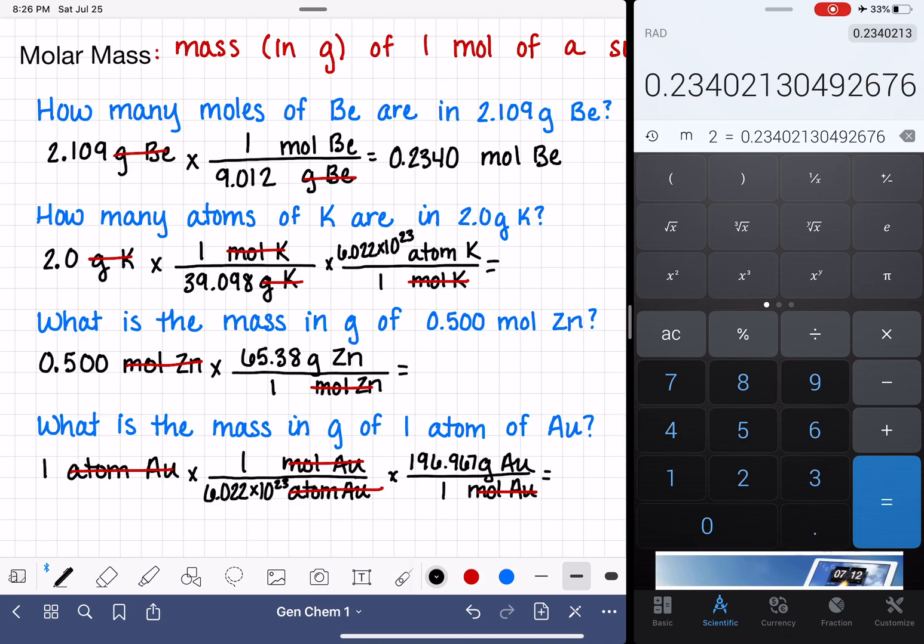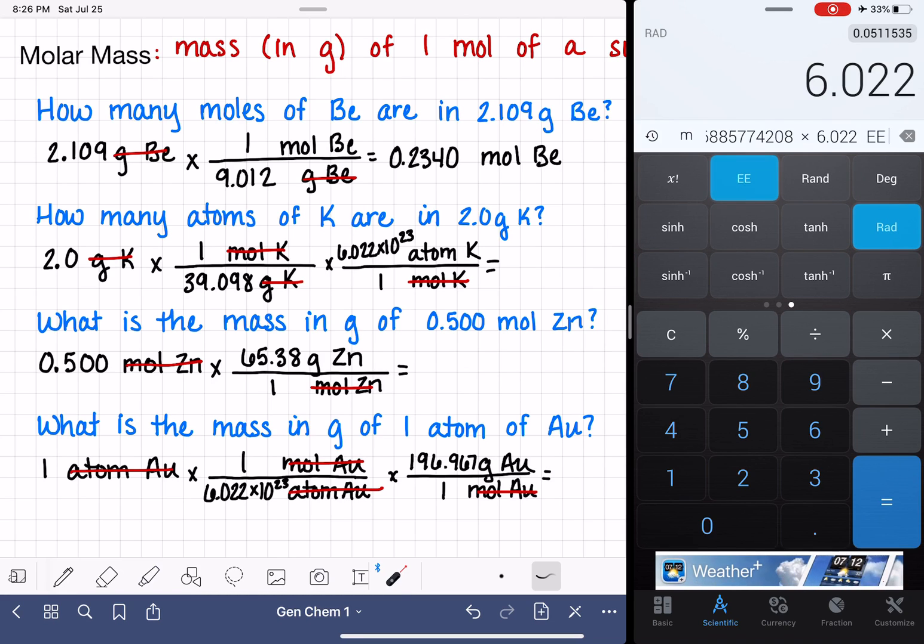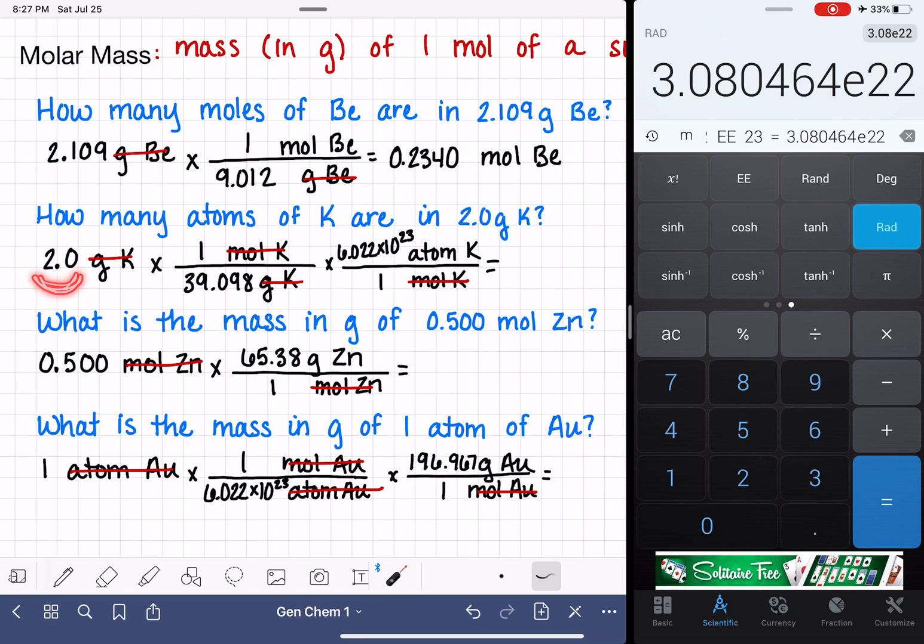So let's start with the first one. To set this up mathematically, we're going to go 2 divided by 39.098 times 6.022 times 10 to the 23rd. Looking at sig figs, we have 2 sig figs right here, 5 sig figs, and 4. 2 sig figs means that we can only have our answer to two significant figures. So that's going to be 3.1 times 10 to the 22. And our units of that are atoms of potassium.